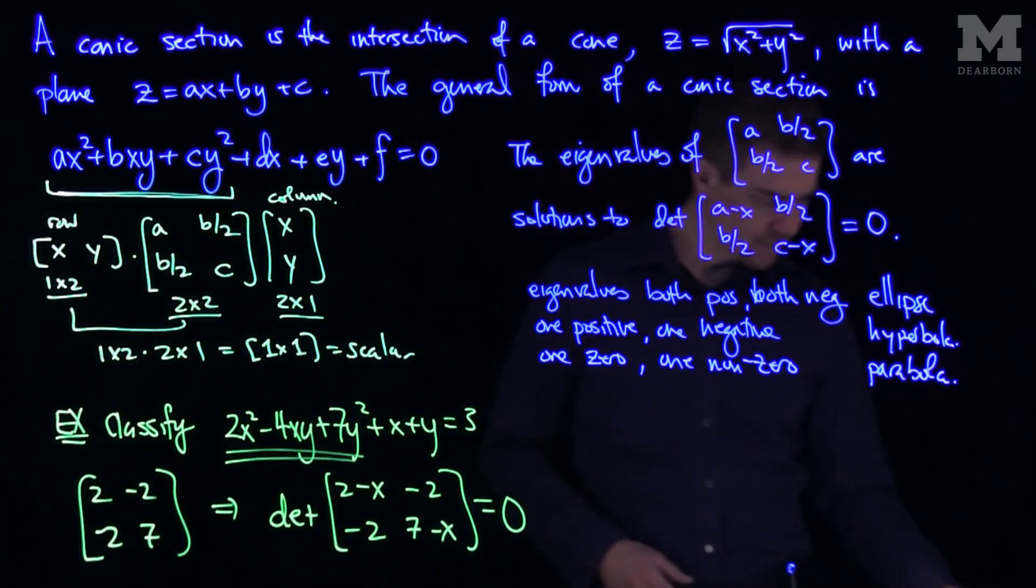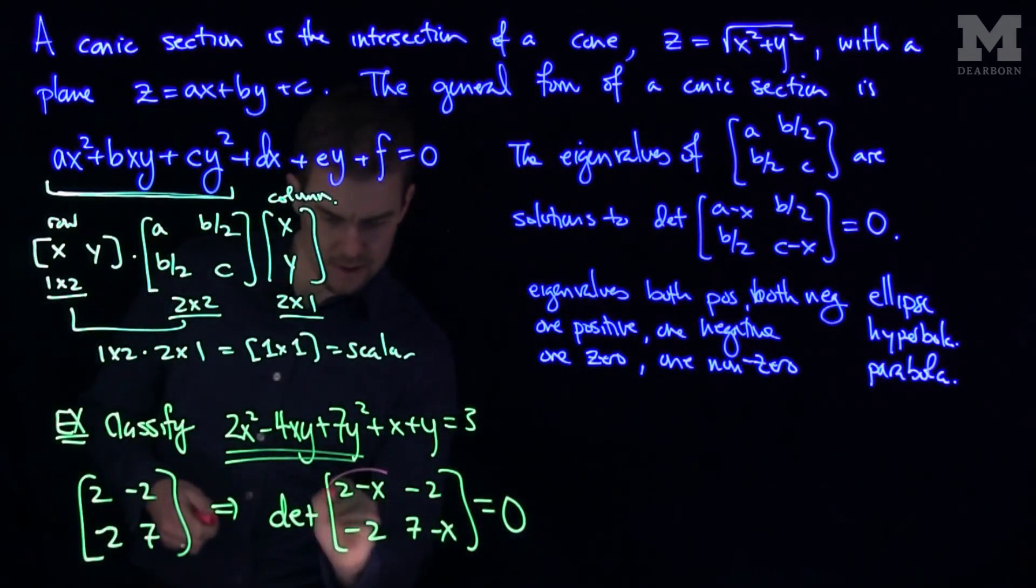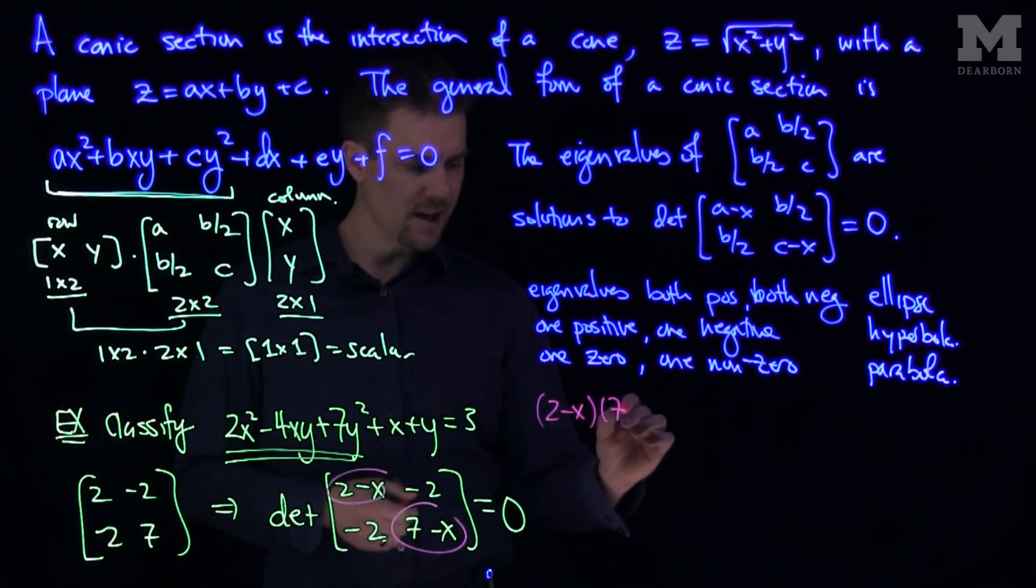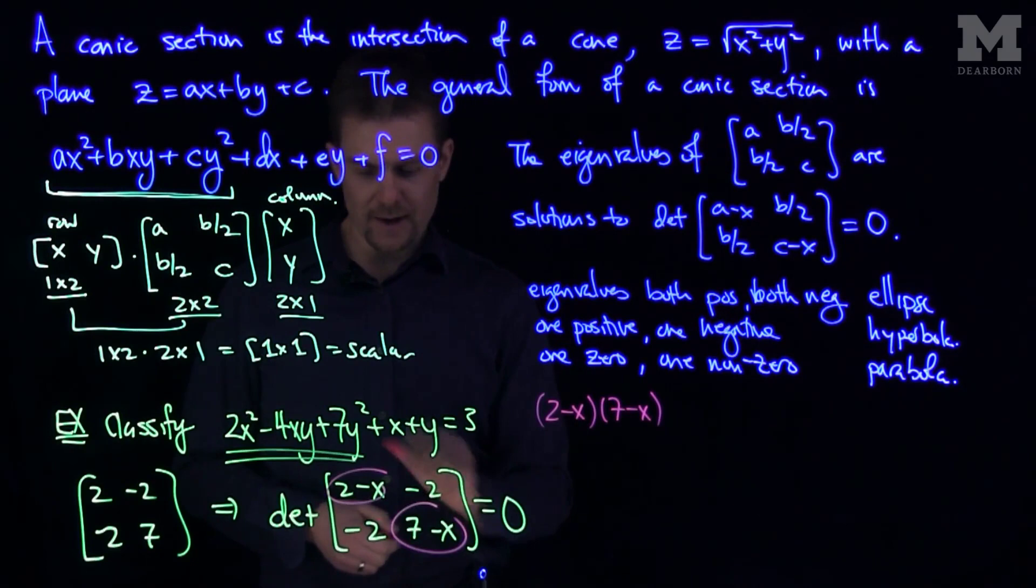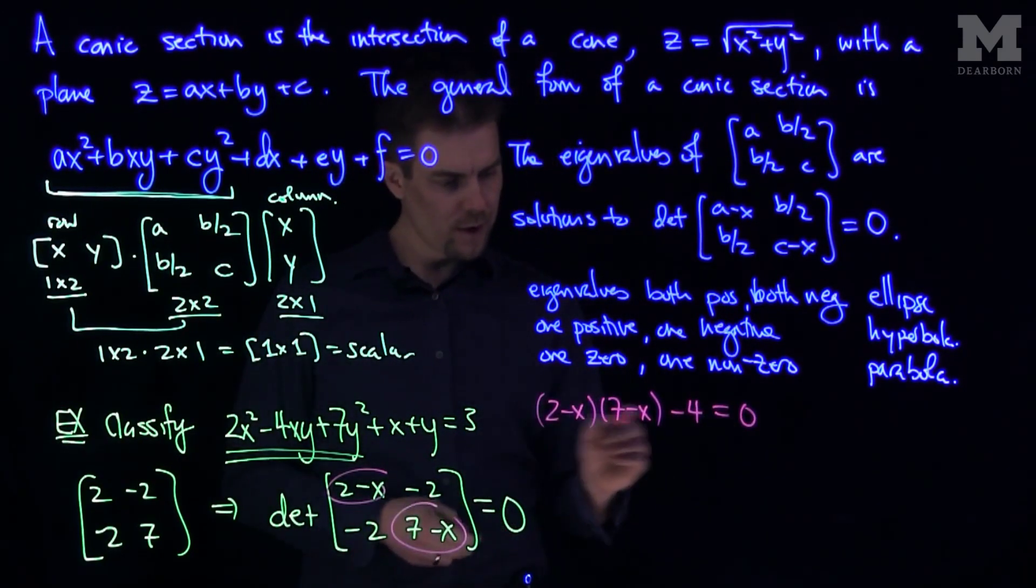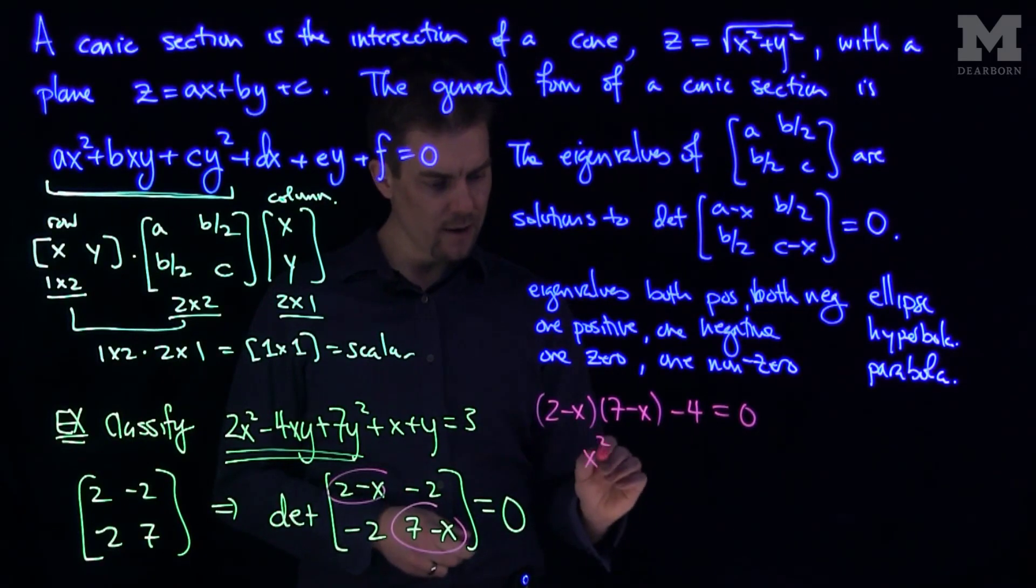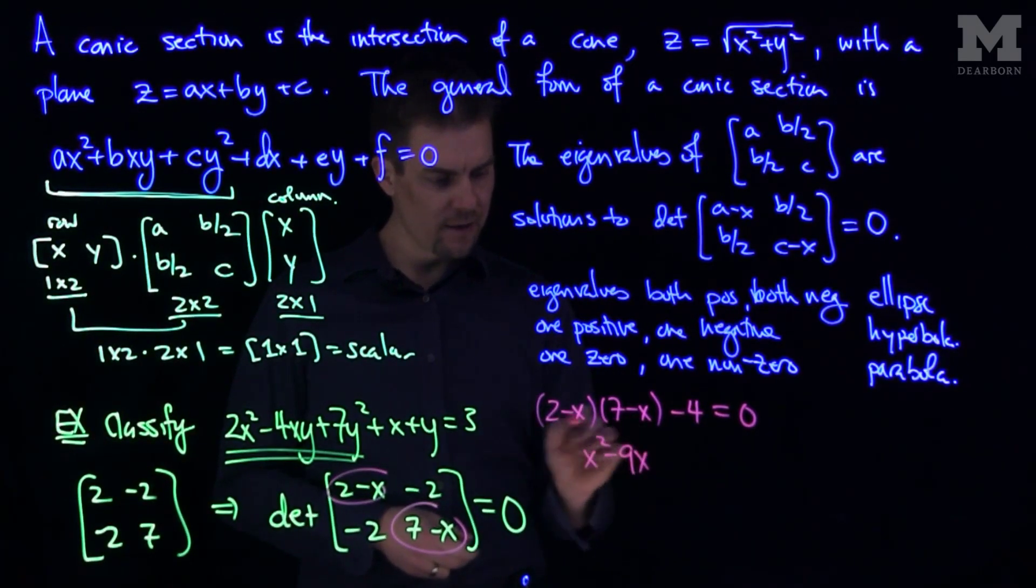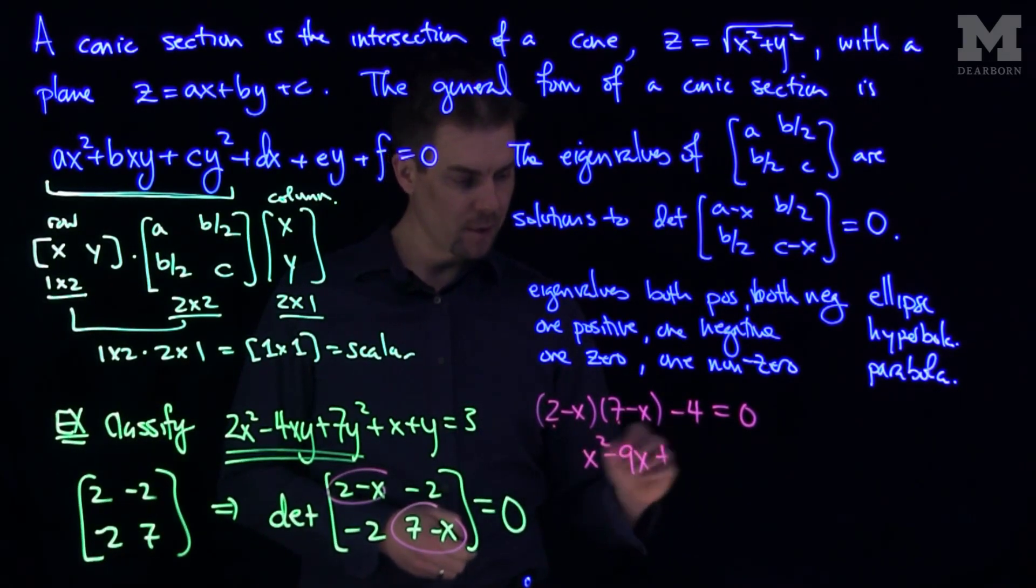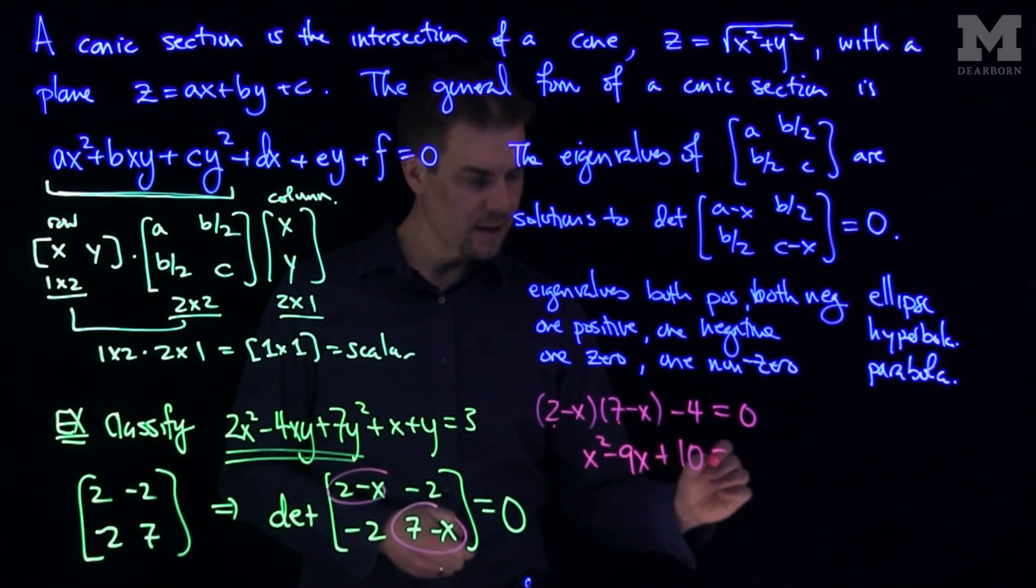So if we do this, what we get, we'll have this times this. So that would be 2 minus x times 7 minus x, and then minus negative 2 is going to be a total of minus 4 equals zero. So if we multiply this out, we'll have x squared minus 9x, and I'll have 14, so 7 times 2 is 14. 14 minus 4 is going to be plus 10 equals zero.